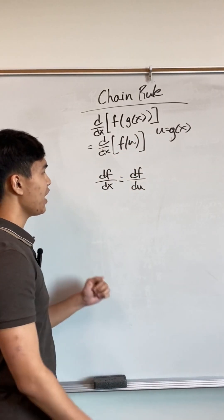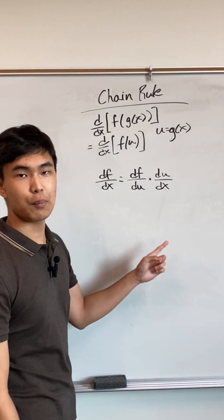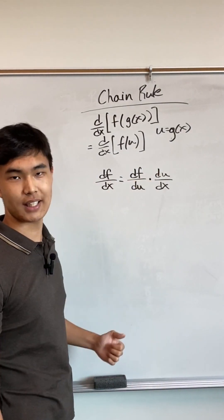Remember, we want df/dx, not df/du. On the right-hand side, we need to get rid of du and introduce dx. So I'm going to multiply by du/dx, and you'll see that the du's cancel just to leave df/dx.